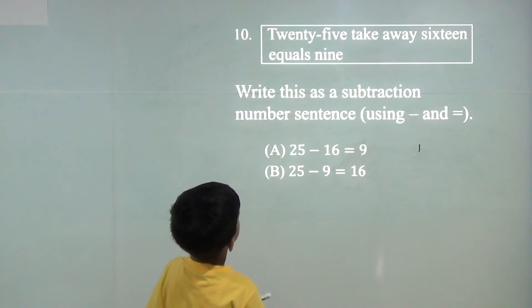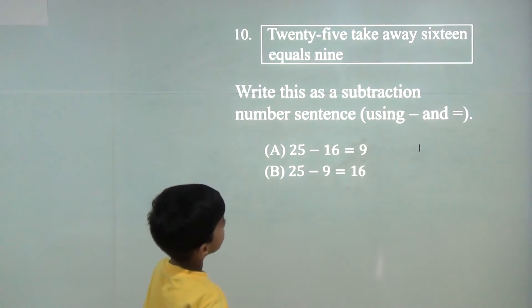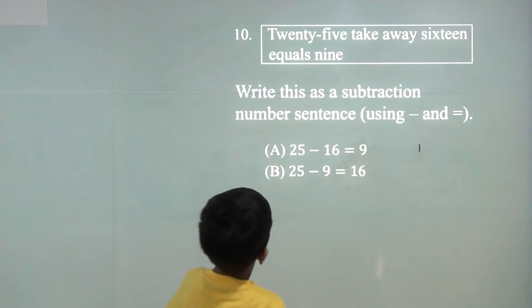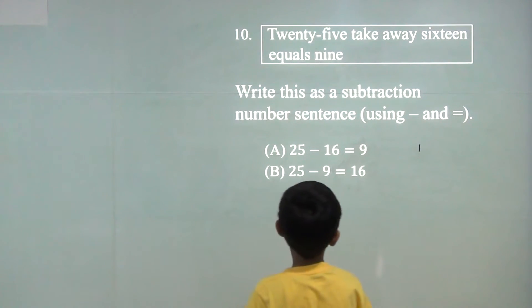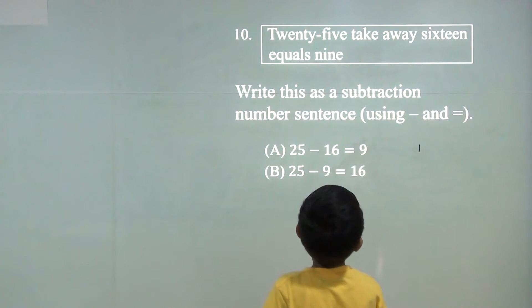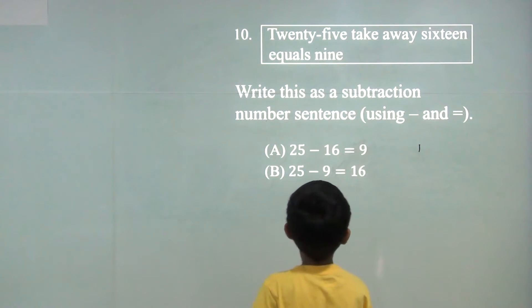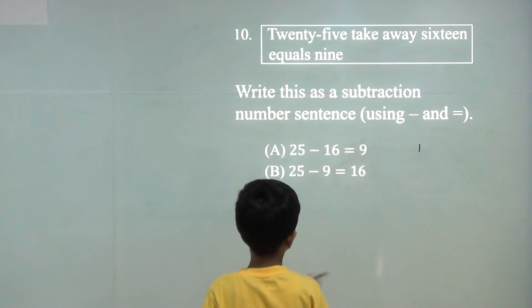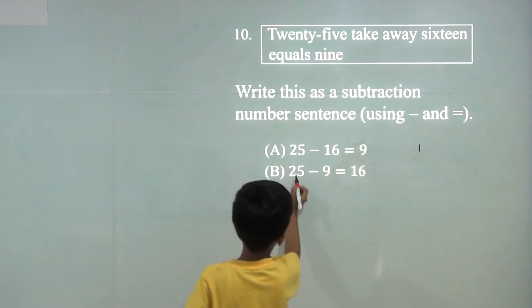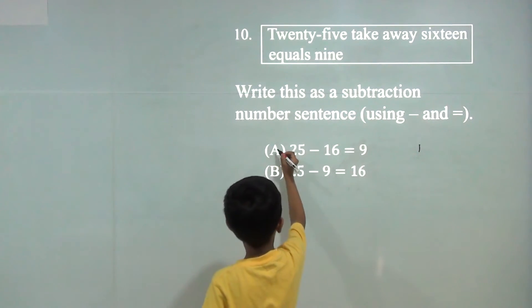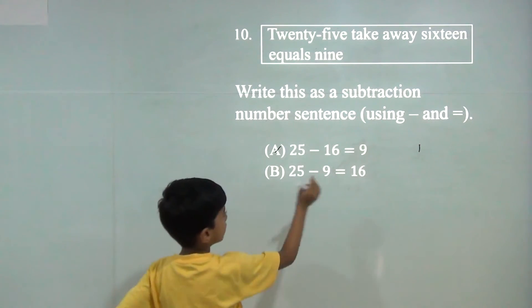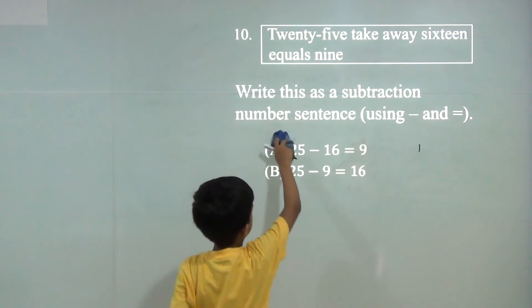25 take away 16 equals 9. 25 minus 16 is 9.